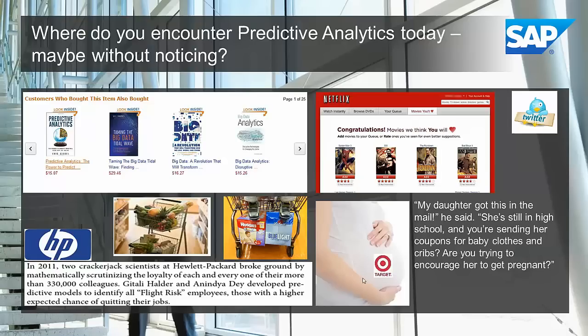You might remember a case where Target was in the media. They were apparently trying to predict pregnancy based on cash register receipts and the customer's email. Apparently they were able to predict the pregnancy of a very young lady. There was a lot of uproar — whether it's a true case is debated. But the idea is, if you could predict pregnancy, you would have some significant revenue to bring to the income statement.